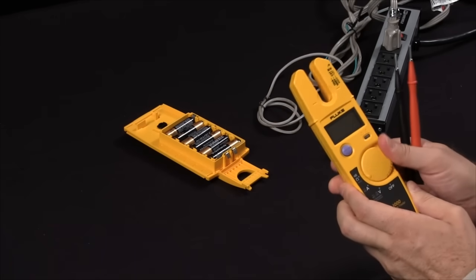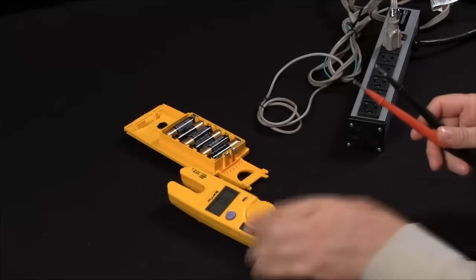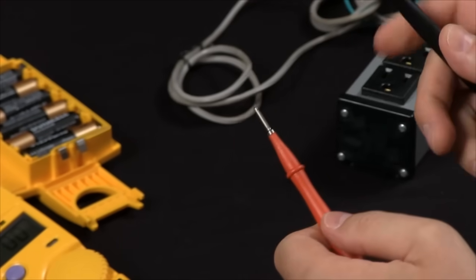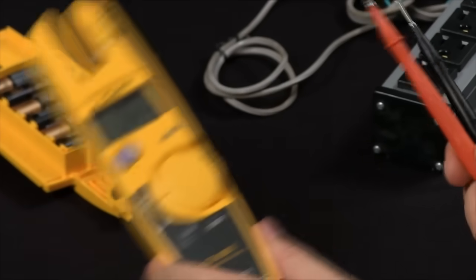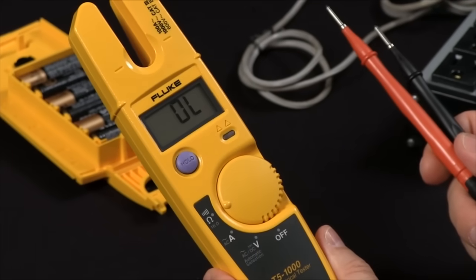Let's start off by making a continuity measurement. All you do is touch your test leads together. It's showing you that you do have continuity. You can also measure resistance up to 1000 ohms.